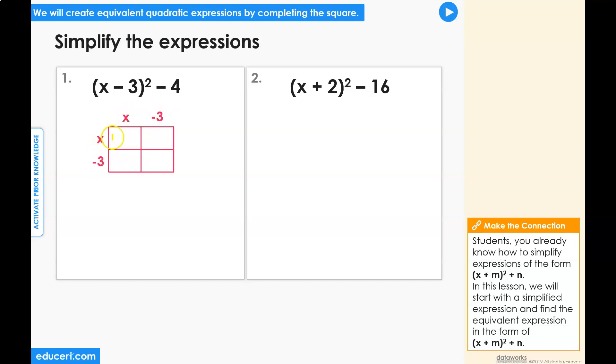x times x equals x squared, x times negative 3 equals negative 3x, negative 3 times x equals negative 3x, negative 3 times negative 3 equals a positive 9.